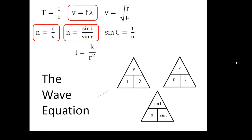I don't like triangles personally, because you can only use a triangle if there are three things, and you'll see that for most of them there isn't three things. But V equals F lambda, with V, F, and lambda in a triangle — that's the wave equation.